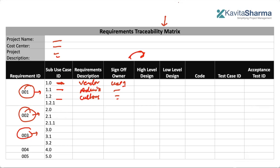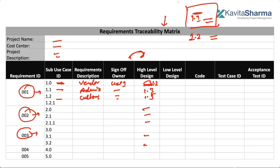Then an architect creates that kind of design document. There is a phase called design. If the architect writes, okay, this registration page requirement — I have addressed it in paragraph 1.1, paragraph 1.2, paragraph 1.3, section 1.5 — he references those section numbers here. The architect needs to ensure all requirements are catered to in the architectural design or blueprint. In software, we also have a low-level design, which is the detailed design done before coding.